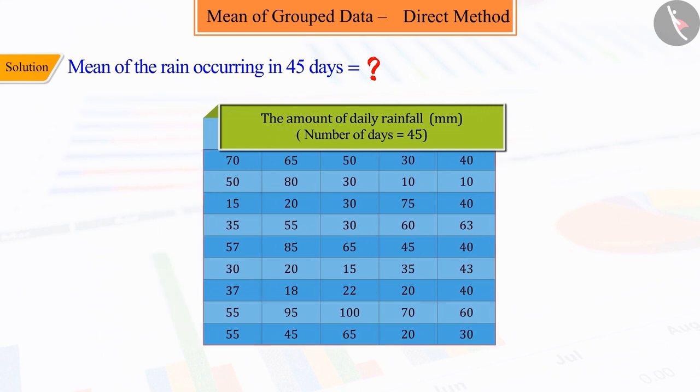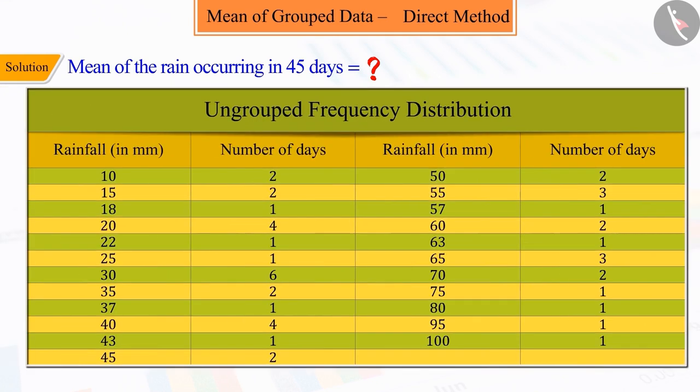From the given example, we can see that it is ungrouped data, where the minimum rainfall is 10 mm and the maximum rainfall is 100 mm. So first, we will construct an ungrouped frequency distribution table, which will be represented as follows.